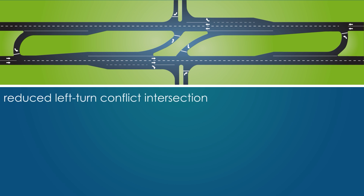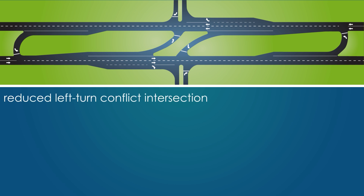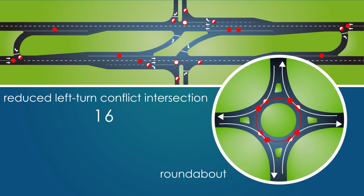Consider a couple different intersection design options. If it were a reduced left turn conflict intersection, vehicle-to-vehicle conflict points are cut in half. If it were a roundabout, vehicle-to-vehicle conflict points decrease from 32 to 8, including the elimination of all left turning and crossing conflicts.